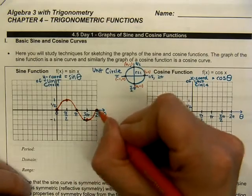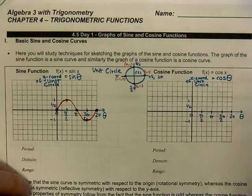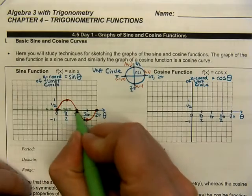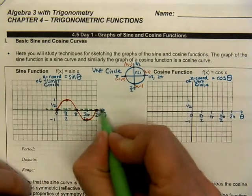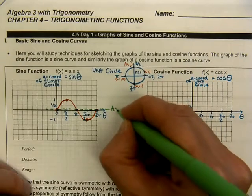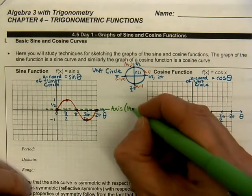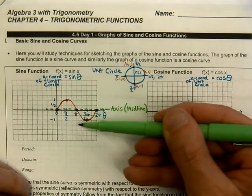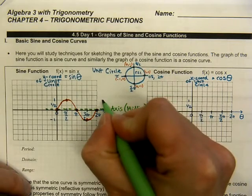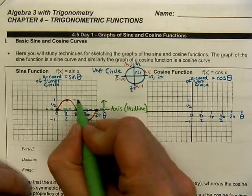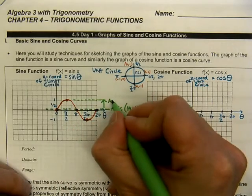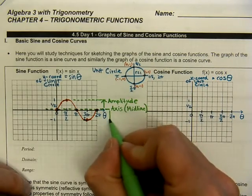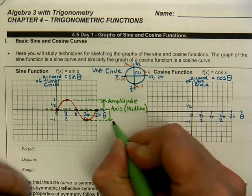We hit that maximum point, come back down, hit that minimum point, turn the corner sharply, and go back up at a 45-degree angle — there's our curve. Down the center I'm using a dashed line to represent the axis, sometimes called the midline. It's exactly halfway between the highest and lowest points. The distance from that midline to the maximum point gives us the amplitude, and the distance from the axis down to the minimum point is also the amplitude.